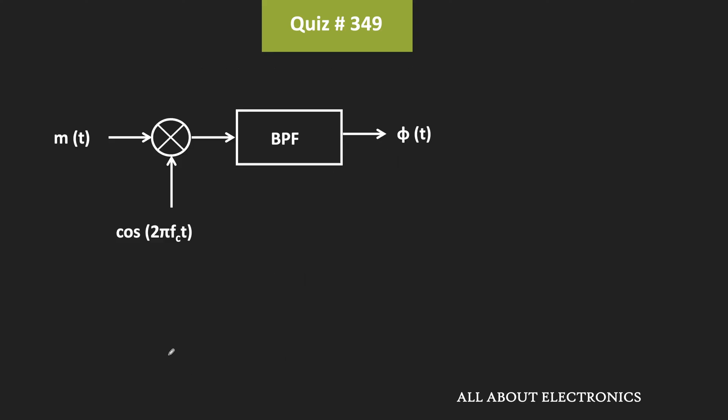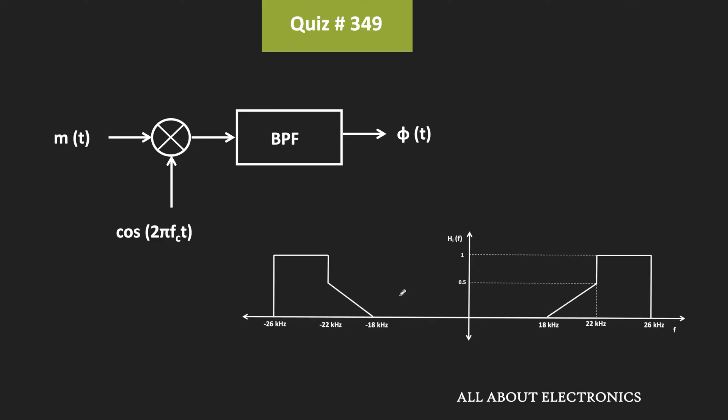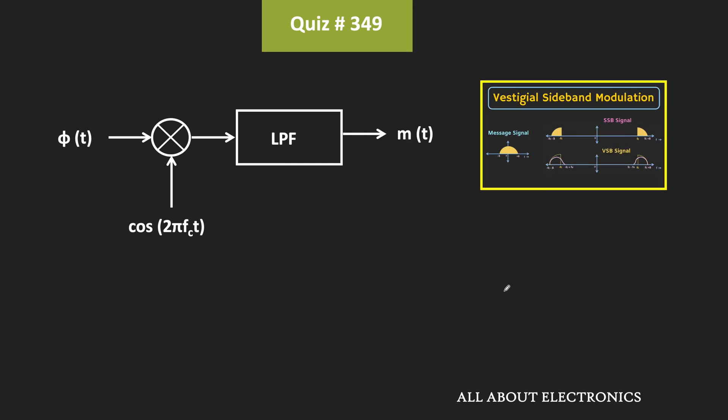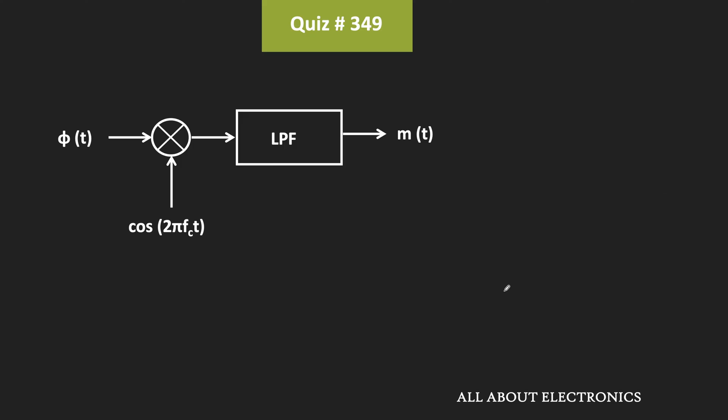We know that in vestigial sideband modulation, at the transmitter the message signal is multiplied with the carrier signal, and then it is passed through the VSB shaping filter. This is the frequency response of the VSB shaping filter. Using synchronous demodulation, it is possible to recover the message signal from this VSB signal.